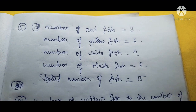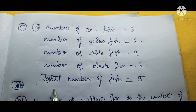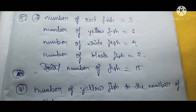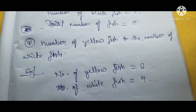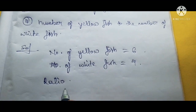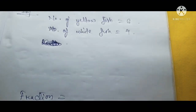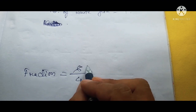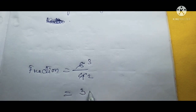Now question 5A. In this question we have different coloured fish: number of red fish is 3, number of yellow fish is 6, number of white fish is 4, number of black fish is 2, and total number of fish is 15. Question A asks for the ratio of yellow fish to white fish. Yellow fish = 6, white fish = 4. Making a fraction: 6 by 4. Cancelling by 2 gives 3 by 2. The ratio is 3 is to 2.